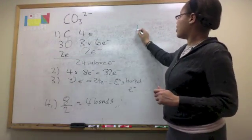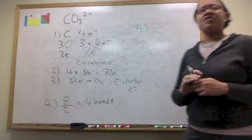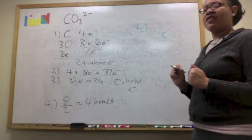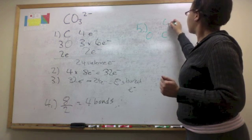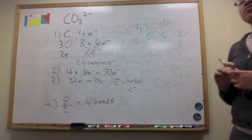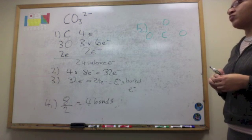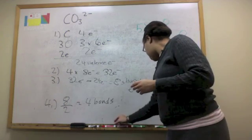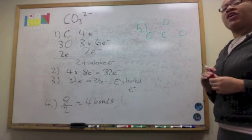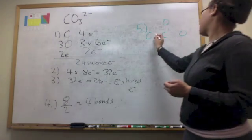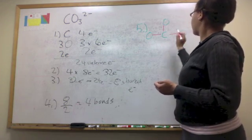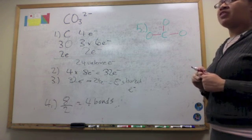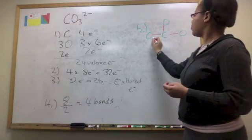The next step is to arrange the atoms in the proper arrangement. Since carbon is the least electronegative atom, we place it in the center of the molecule, surrounded by the 3 oxygen atoms. We then fill in our 4 bonds: we start by drawing a single bond between carbon and each of the 3 oxygen atoms, then place the 4th bond as a carbon-oxygen double bond. For now, it does not matter where we put that 4th bond, so we place it on the left.